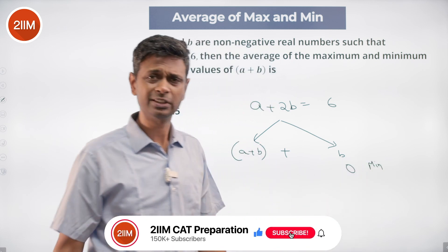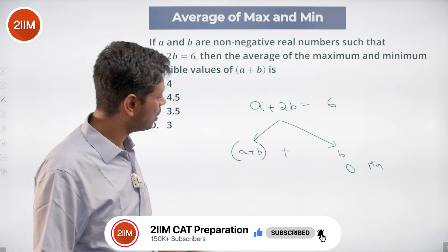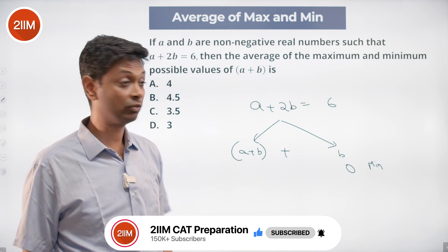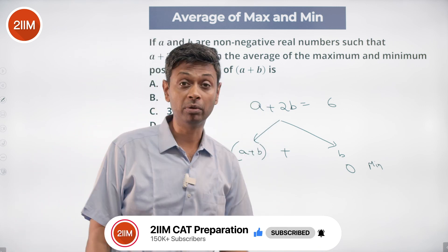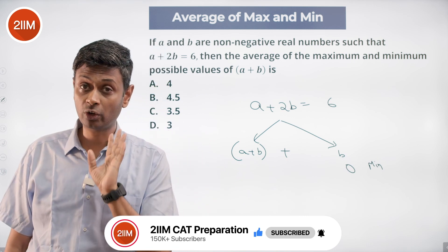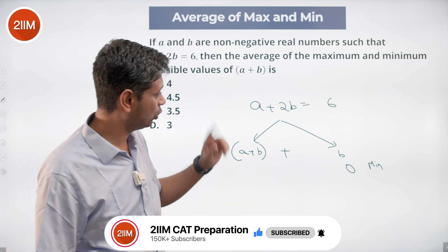Minimum value b can take? Zero. Non-negative, can't go below zero. What's the maximum value b can take? b is maximum, a should be minimum. Put a as zero because a cannot be less than zero. Put a as zero, b is 3.